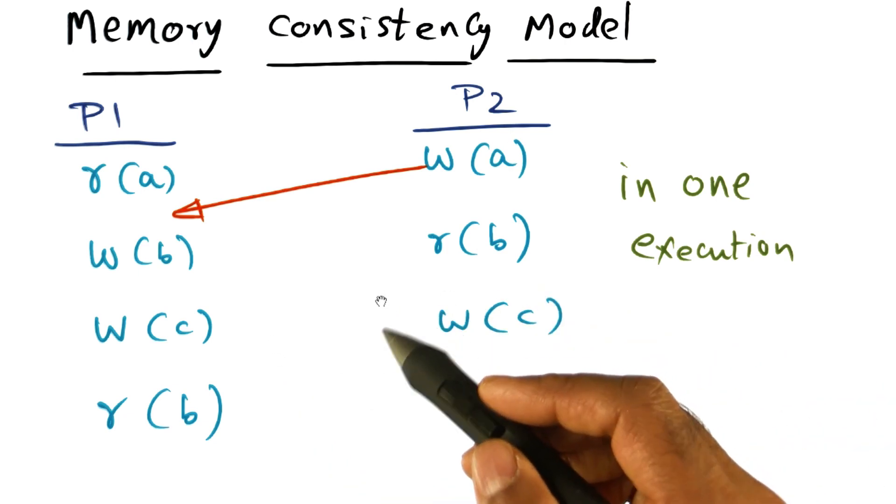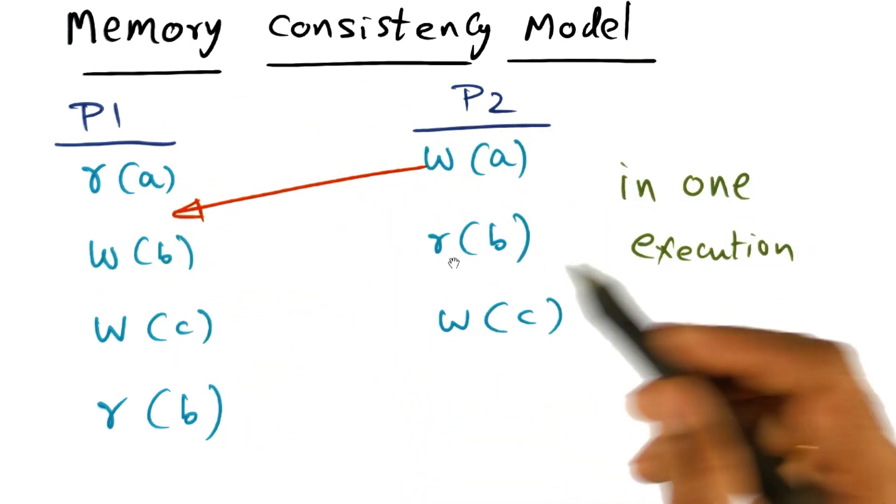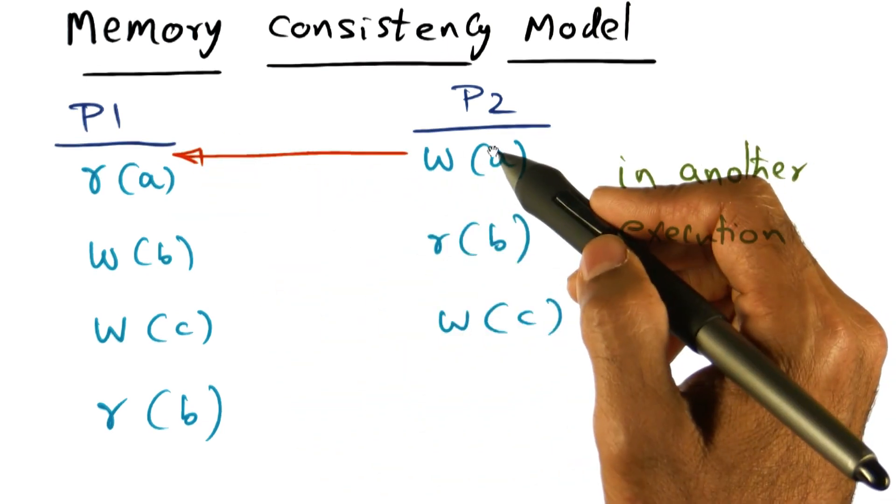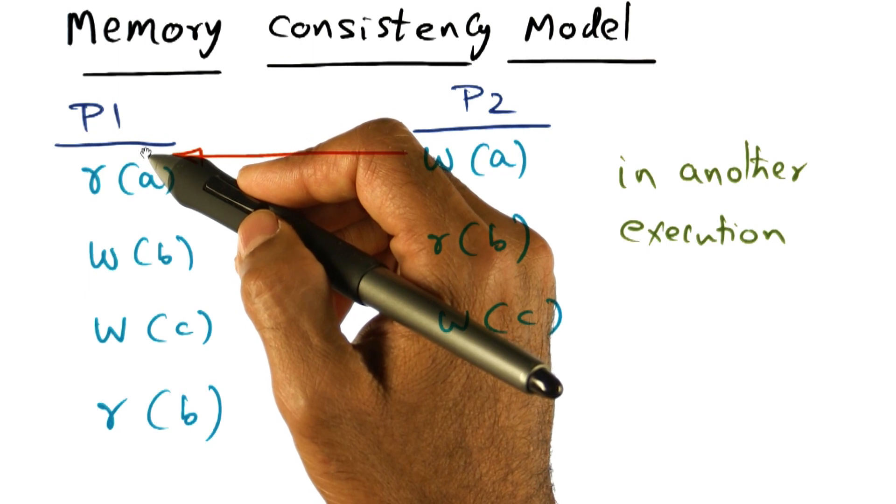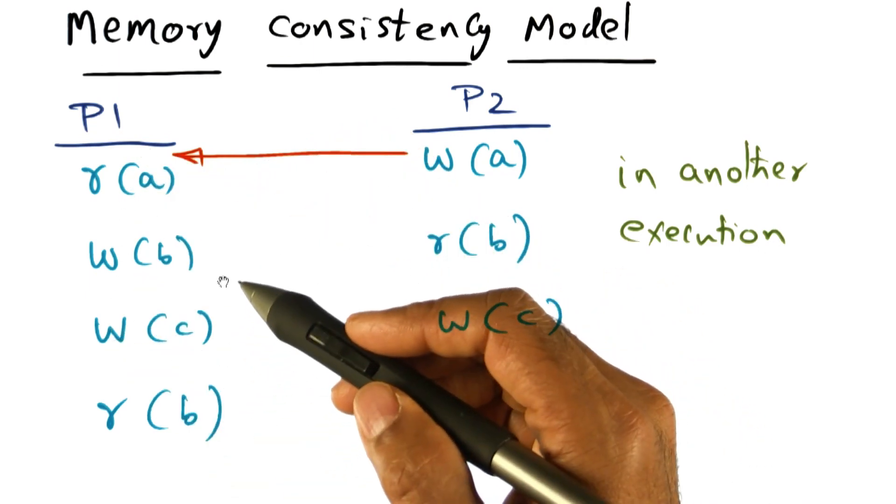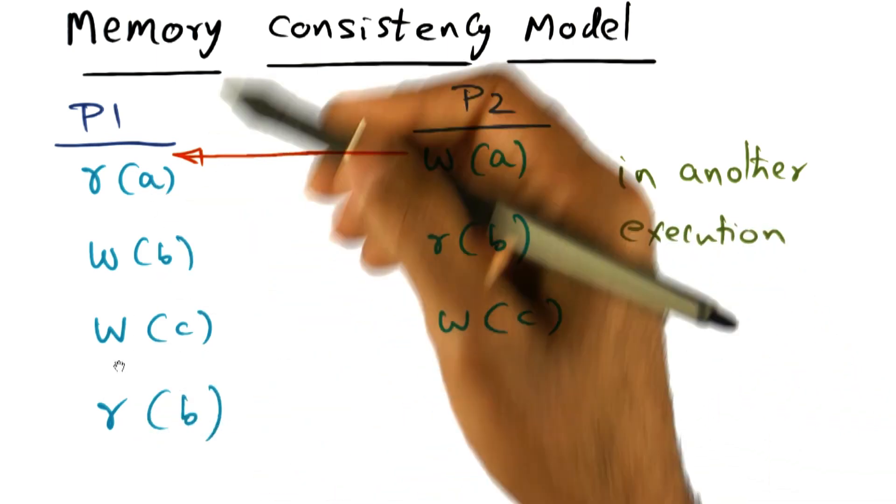And if you run the same program again, P2 and P1 constituting the program, it's possible that in another execution of the same program, write of A happens before the read of A. It's perfectly feasible for this to happen because there is no guarantee on the ordering of these accesses going to main memory.